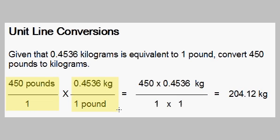We write 0.4536 kilograms over 1 pound. Now we know that this is correct because the units of pounds cancel out. The pounds cancel, and what we are left with is kilograms. That is the unit we want in our answer. That is the unit that is left after cancellation.